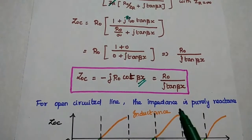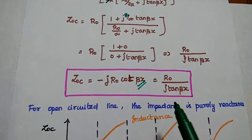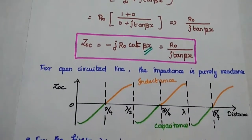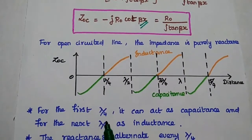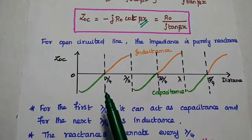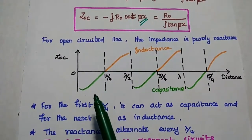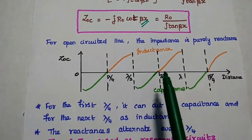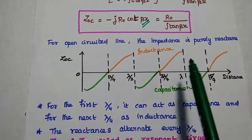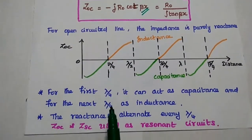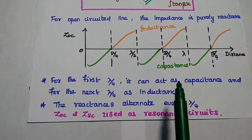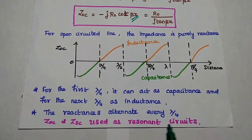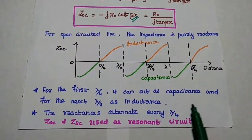This is also an imaginary value — purely reactive. For open circuit line, the impedance is purely reactance, either inductive or capacitive. For the first quarter wavelength, the input impedance acts as a capacitive reactance. For the next quarter wavelength, it acts as an inductive reactance, and so the reactance values alternate every quarter wavelength. Hence, both open circuit line and short circuit line can be used as resonant circuits or tank circuits in the transmission line.